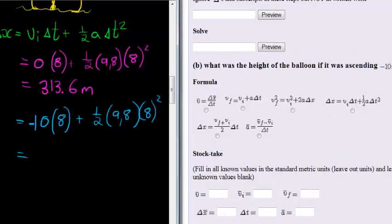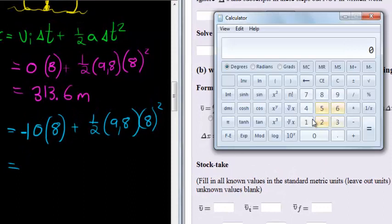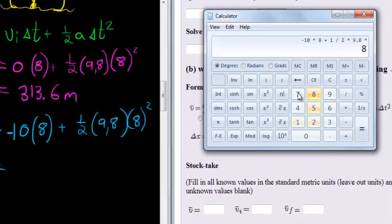Our answer is negative 10 multiplied by 8 plus 1 over 2 times 9.8 times 8 squared.